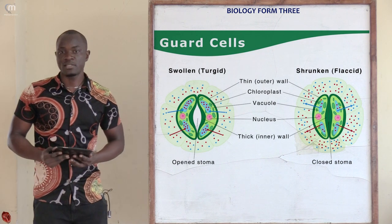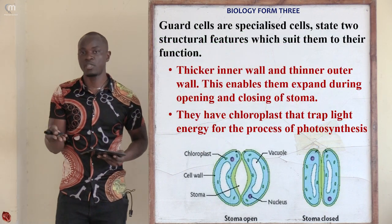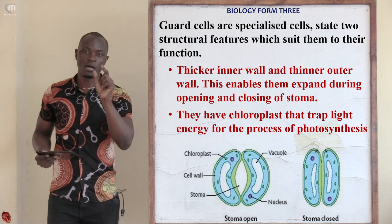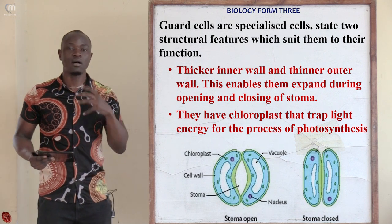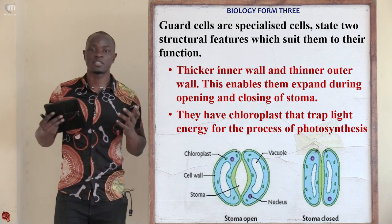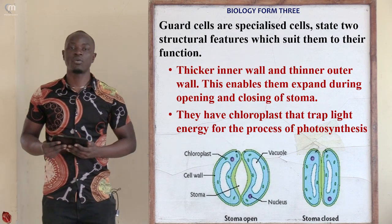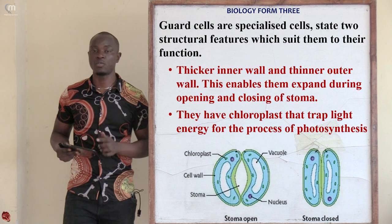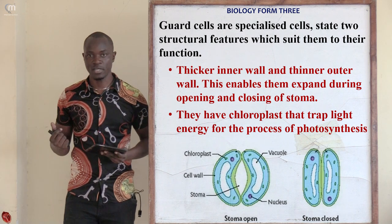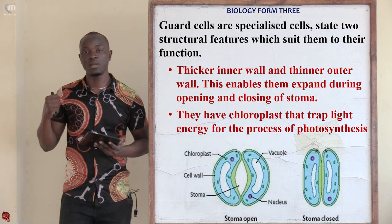The first feature is that guard cells possess a thicker wall on the inside and a thinner wall on the outside. This allows the guard cell to accommodate water and expand to open or close the stoma. The thinner outer wall allows expansion and stretching, while the thicker inner wall allows for the opening of the stomata as the outer wall stretches.